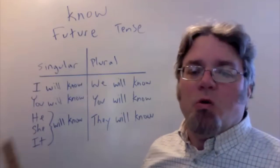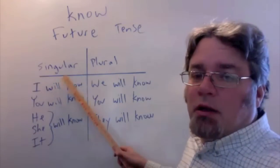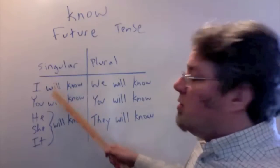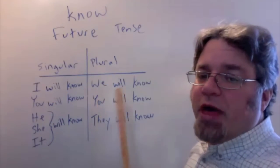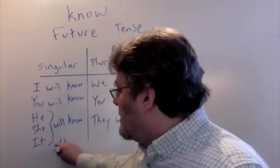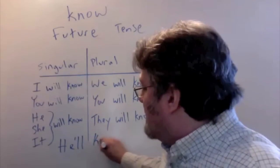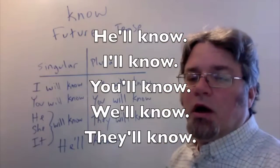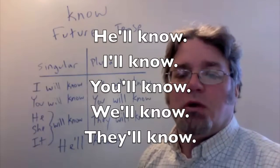Here's the verb know in the future tense. Using the modal verb will, it doesn't matter what the subject is, it doesn't change. I will know, you will know, he will know, we, you, they will know. Of course, most people will use a contraction. So if I use he and will together, it sounds like he'll - he'll know. I'll know, you'll know, we'll know, they'll know.